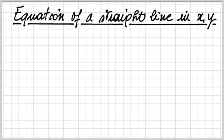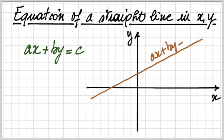Now, when we look at the equations of a straight line in x and y, we typically say that that equation is ax plus by is equal to c. And when we draw this line, we see we have a straight line with the equation ax plus by is equal to c. And in this case, we have a line which goes up from left to right.